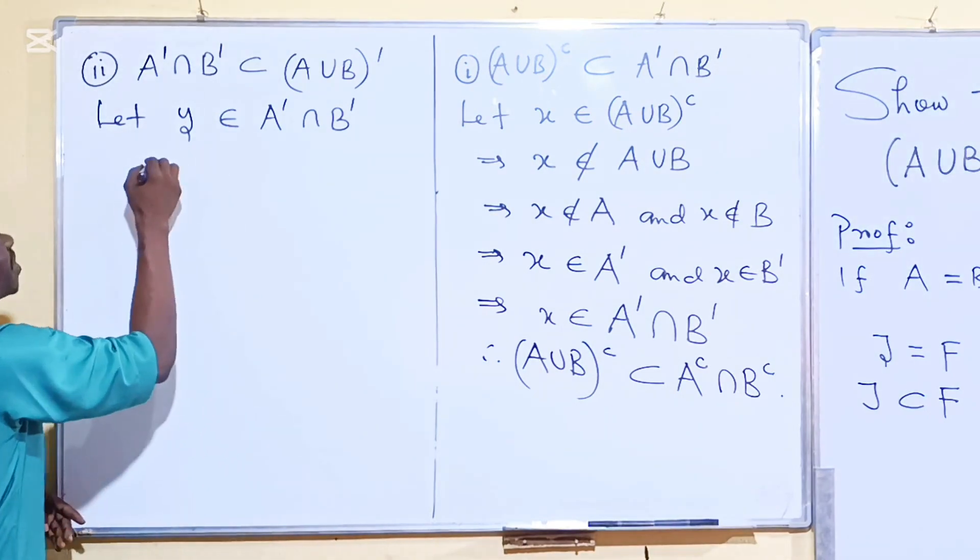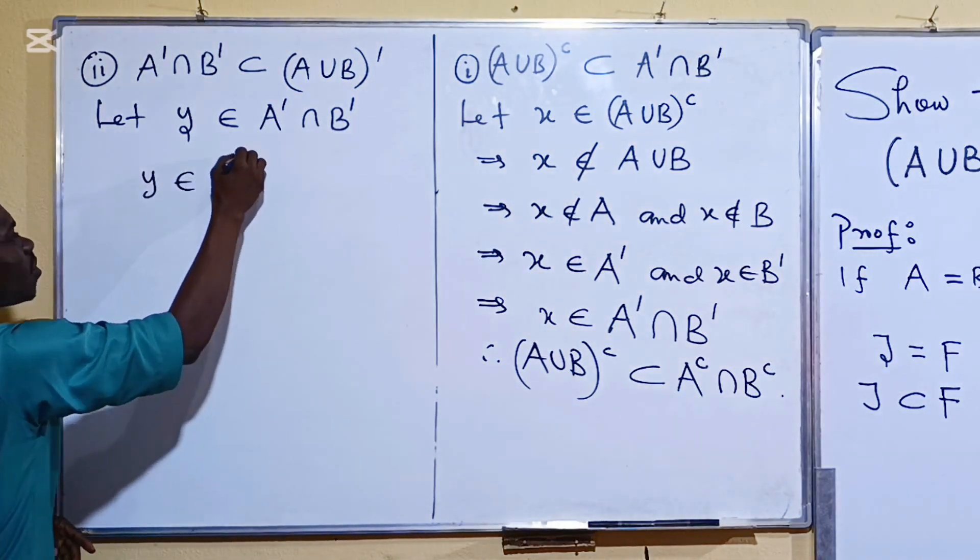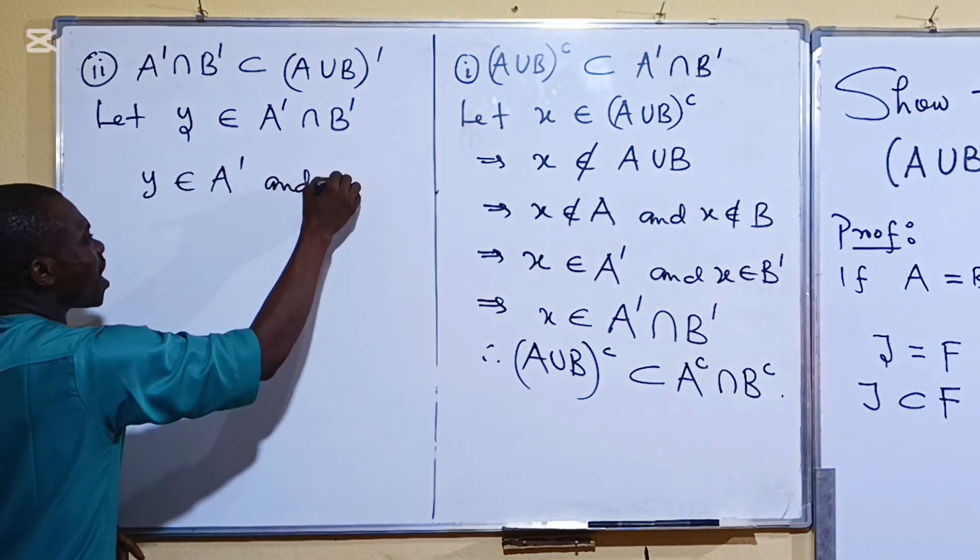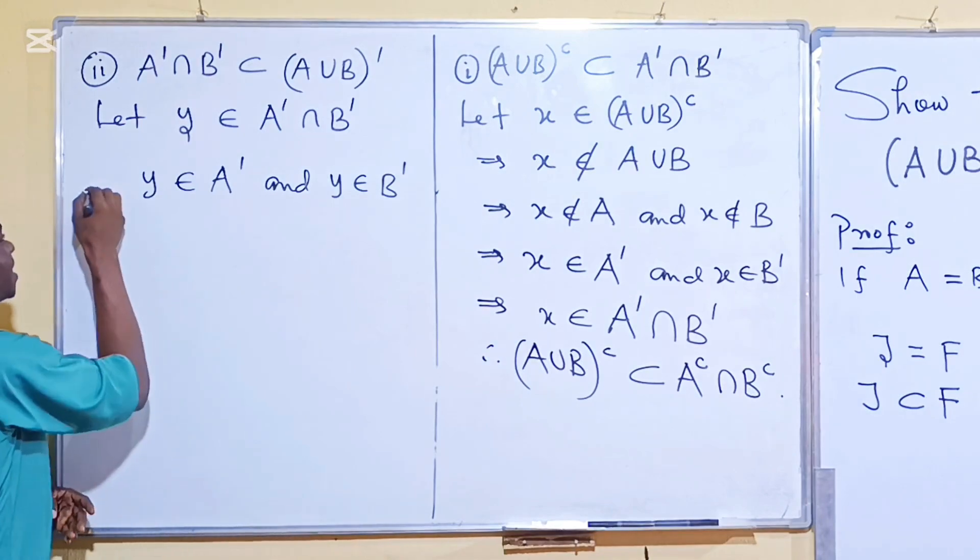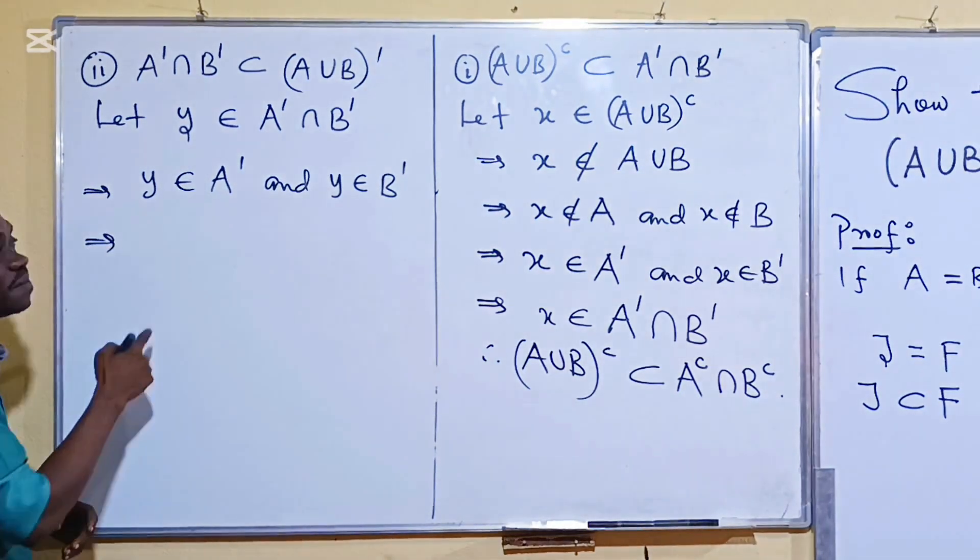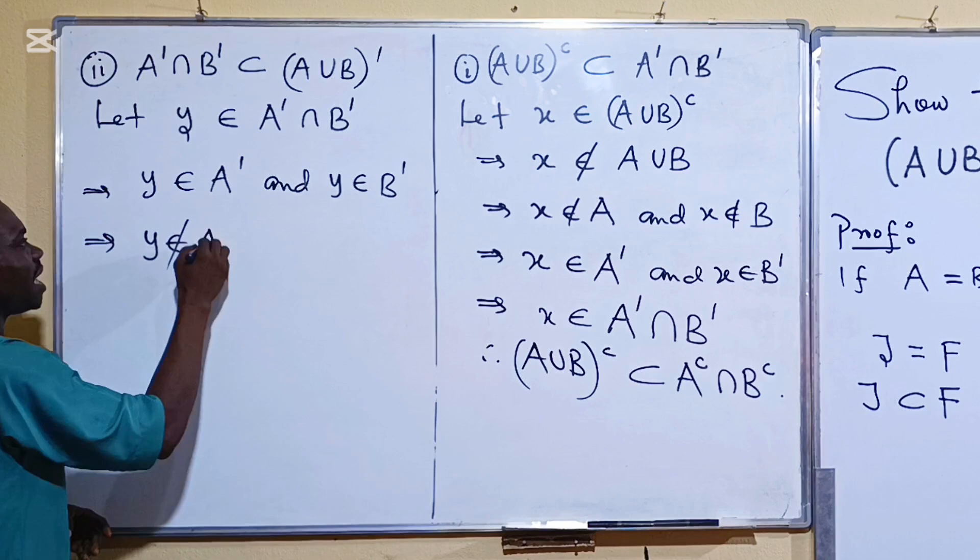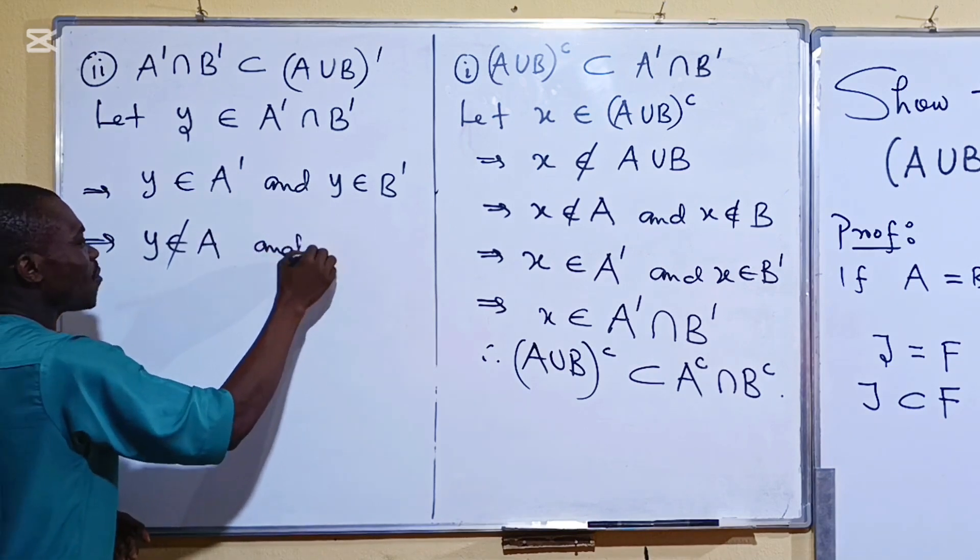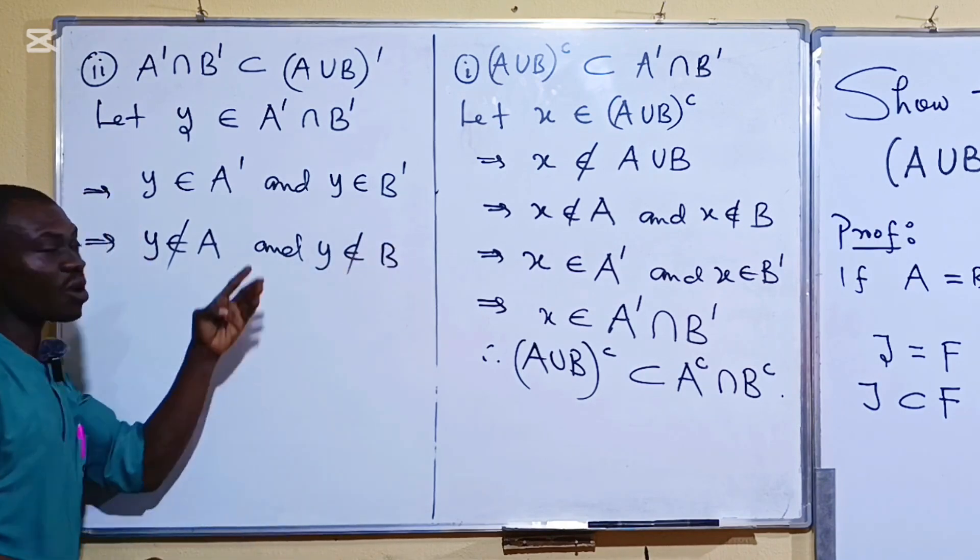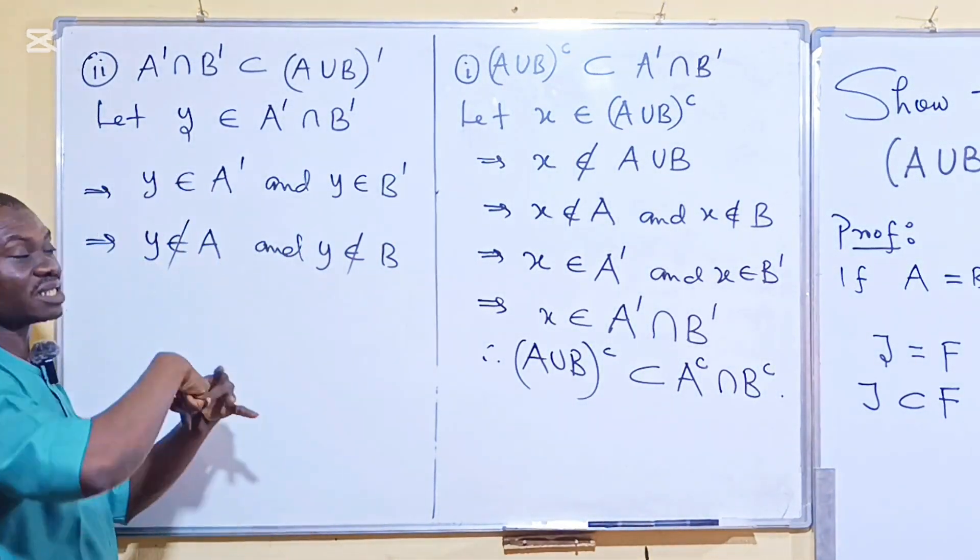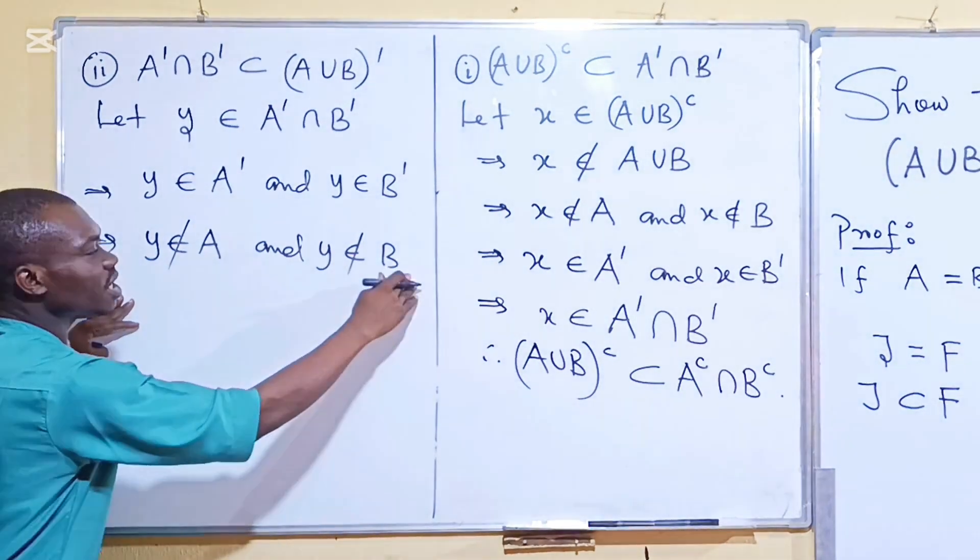If Y is in the intersection, so Y is in A complement and Y is in B complement. Of course that's the meaning of intersection. And then that is the implication. So secondly, if Y is in the complement, it means that Y is not in A and then Y is not in B. So once it's in the complement then it's not in the sets themselves. And if Y is neither in A nor in B,